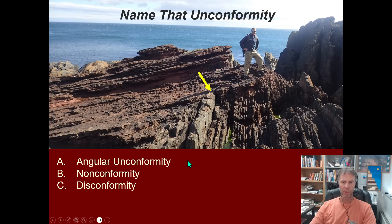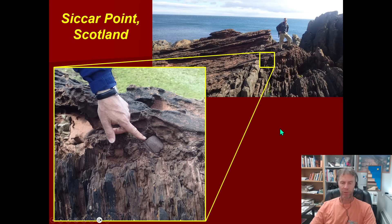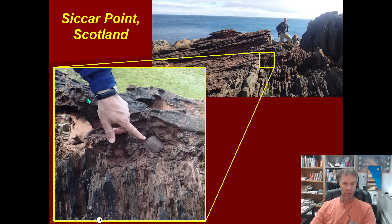If you recognized this location, this is actually a fairly popular and semi-sacred site amongst geologists: Siccar Point, Scotland. This is where James Hutton was able to figure out some of these very fundamental principles in geology in the late 1700s. Here's a blown-up shot of that contact showing the vertically oriented sedimentary rocks, the erosional surface including one clasped or eroded piece of gravel, and then these more gently dipping sandstones right here.